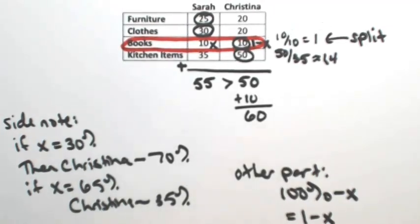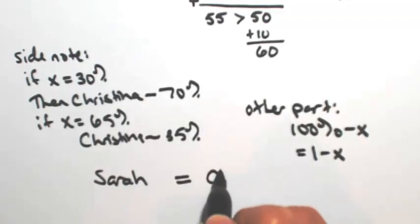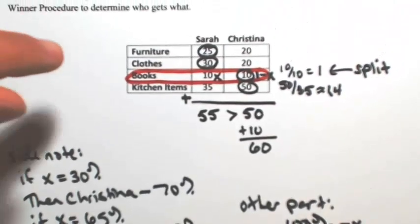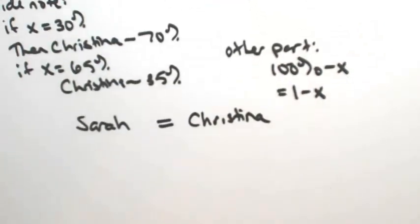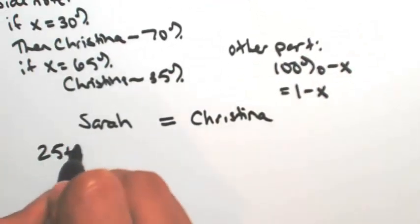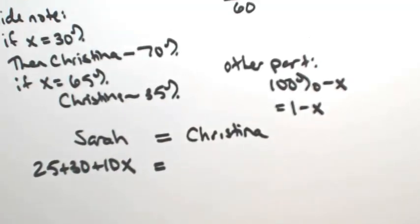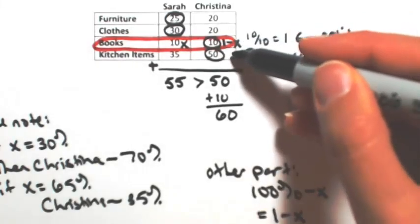So to set up the equation, what we want is Sarah to equal Christina. We don't want someone to get more than the other person. So on Sarah's side, everything that's circled - the 25 and the 30 and then the 10x - will equal everything on Christina's side, which is 10 times 1 minus x plus 50.